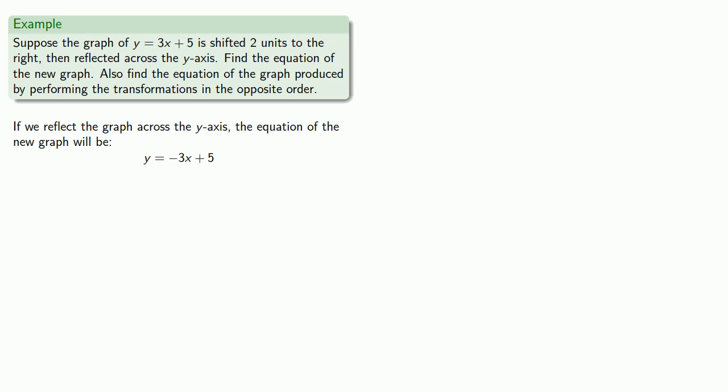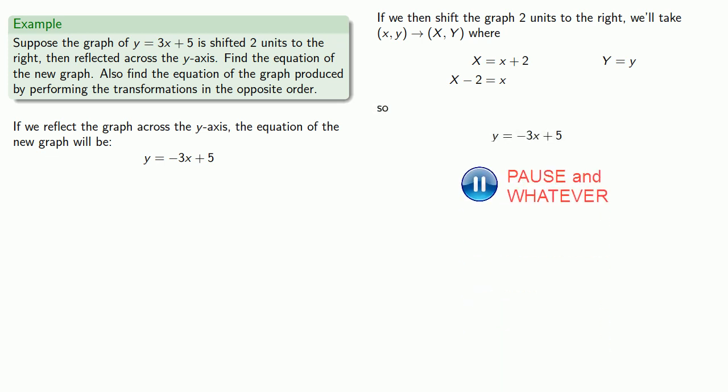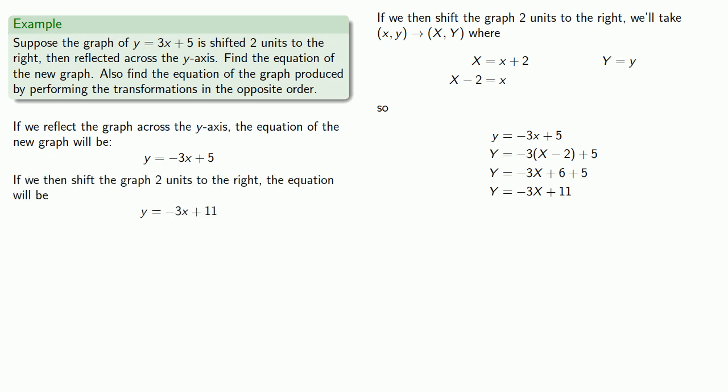The other transformation requires us to shift 2 units to the right, so our new x and y coordinates will be. And again, we'll solve for the original x and y coordinates and replace and simplify. And summarize, if we shift the graph 2 units to the right, the equation will be y equals negative 3x plus 11.